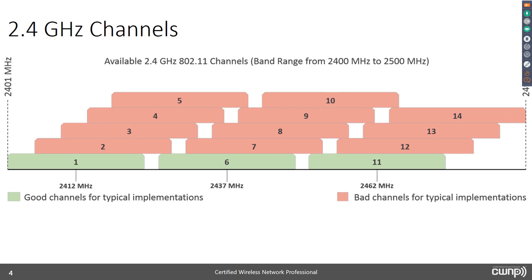The 2.4 GHz band runs from 2400 to 2500 MHz. We don't use all of that for our 802.11 channels — even channel 14, which is only allowed in Japan, doesn't use all that space. Some space is left at the top and bottom of the band as padding. Channel 1 is centered on 2412 MHz; even subtracting 11 MHz for an 802.11b channel puts the low end at 2401 MHz, so there's still a megahertz of padding at the low end. This helps prevent leaking outside the band beyond FCC and other regulatory rules.